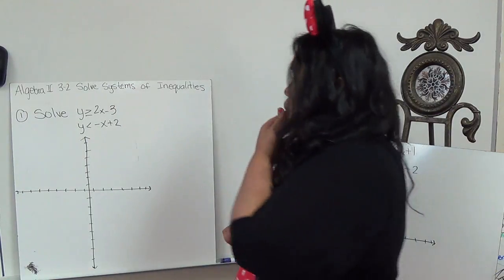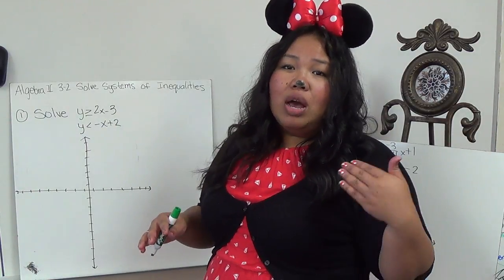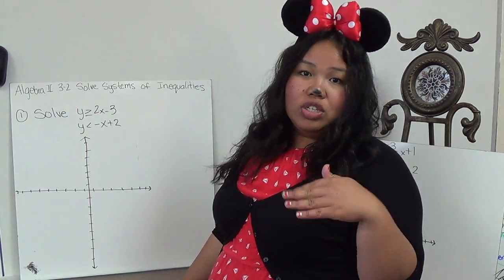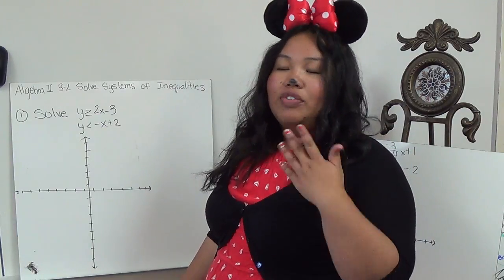So we're going to just take it one equation at a time. Now it's super tempting for some people to draw both lines and then shade later, but I would take it one equation at a time. Take the equation, solve it, then shade in, and then take the next equation, solve it, and shade it.